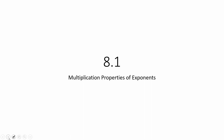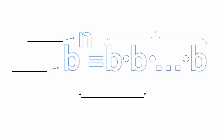In this video we are going to talk about the multiplication properties of exponents. I've written b to the n, which equals b times b times... times b. A power is made up of a base, which is our normal number, and an exponent, which is the smaller number up and to the right. Either of these could technically be variables.